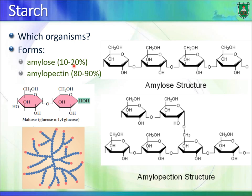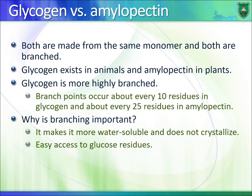When amylopectin or amylose are degraded, they are broken down into simpler molecules including maltose, a disaccharide made of two glucose units, and ultimately free glucose. Both glycogen and amylopectin are made from glucose and are branched storage molecules — glycogen in animals and amylopectin in plants.